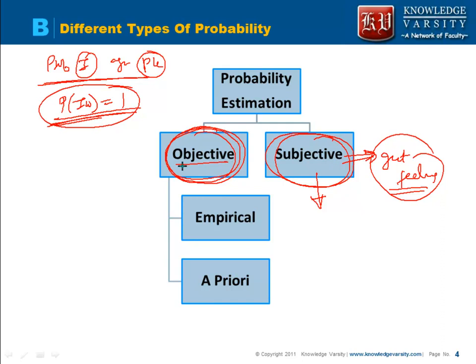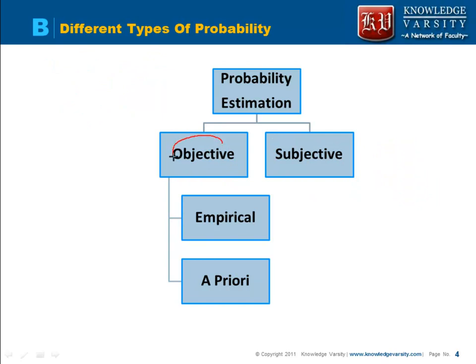We want to do some analysis which is objective in nature. So what is objective probability? Objective probability is wherein you apply some brain. You apply your brain and you try to decipher what should be the probability. There are two ways in which the probability can be estimated which is coming under this heading of objective probability.